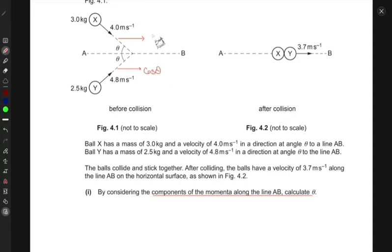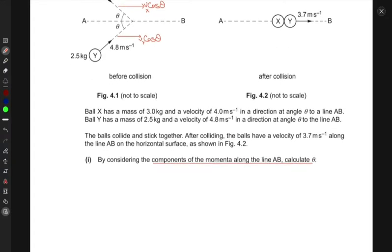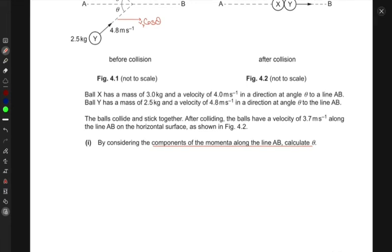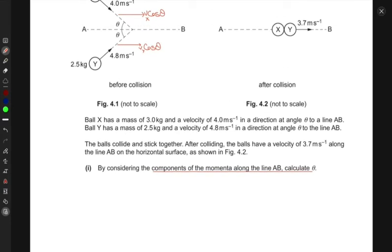These would be the cos theta components of velocity. Let's call this Vx and this Vy. We want to calculate the angle theta. We can do that because we know these components.